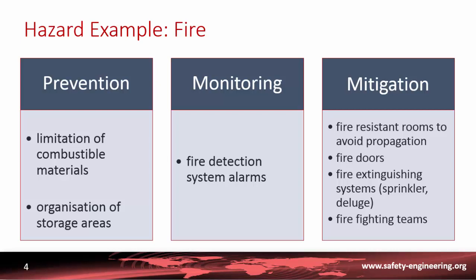In addition, as a mitigation element, there are fire extinguishing systems such as sprinklers or deluge systems. The last line of mitigation is through firefighting teams. On each nuclear plant, there are permanently on-call firemen who are trained to intervene and extinguish fires.